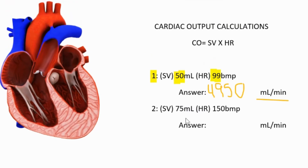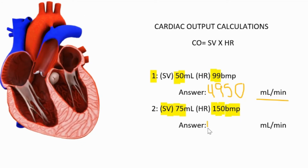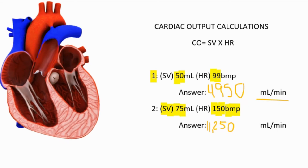Now let's go down to number two. You have 75 milliliters as your stroke volume multiplied by 150 beats per minute as your heart rate, and that will give you eleven thousand two hundred and fifty milliliters per minute.